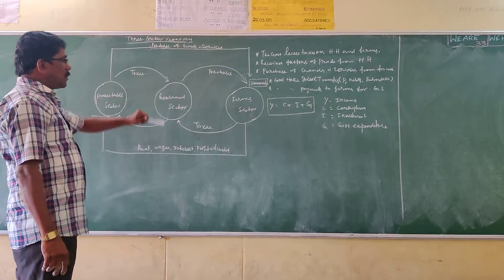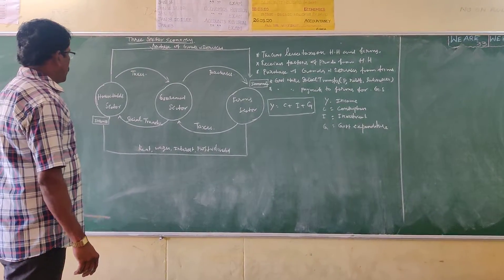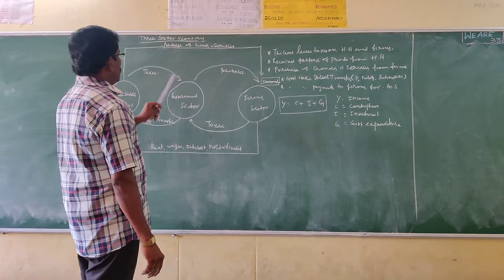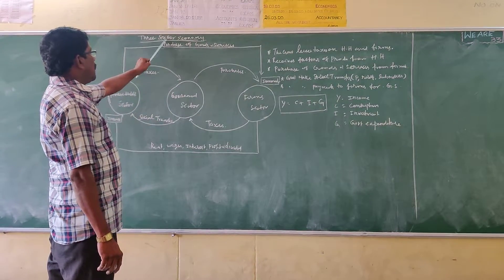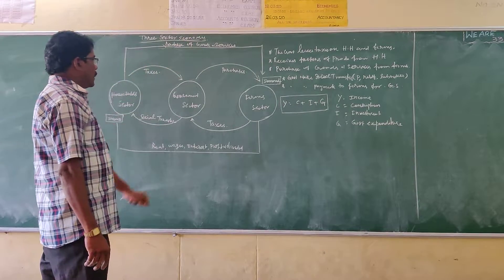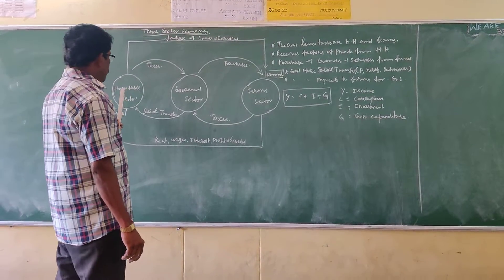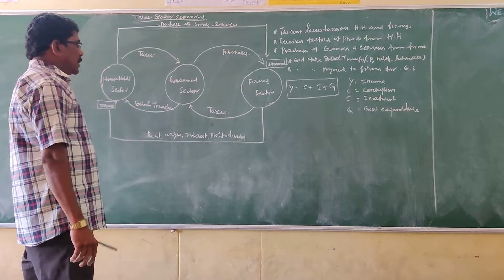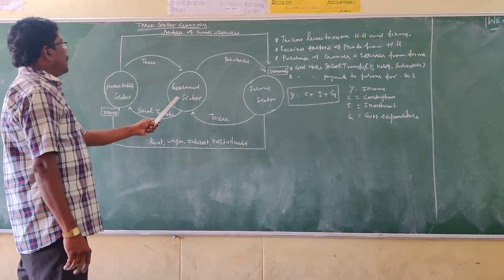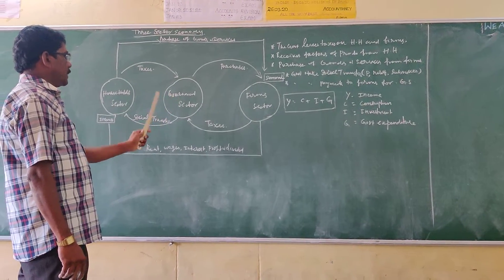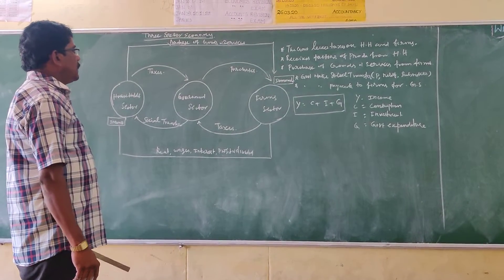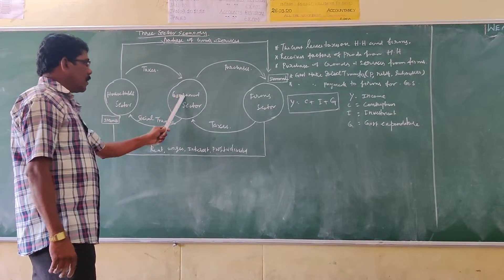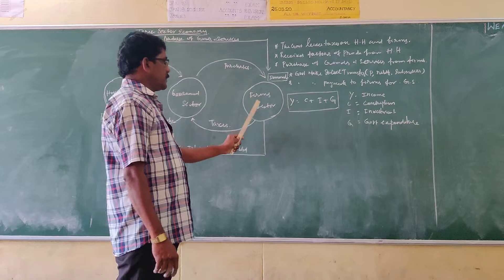In the previous case, we saw a two-sector model with only two sectors: the household sector and the firm sector. In this case, the three-sector model includes three sectors. In addition to the household sector and the firm sector, the third sector is the government sector. So in the three-sector model, there are three sectors: number one, household sector; number two, government sector; and number three, firm sector.